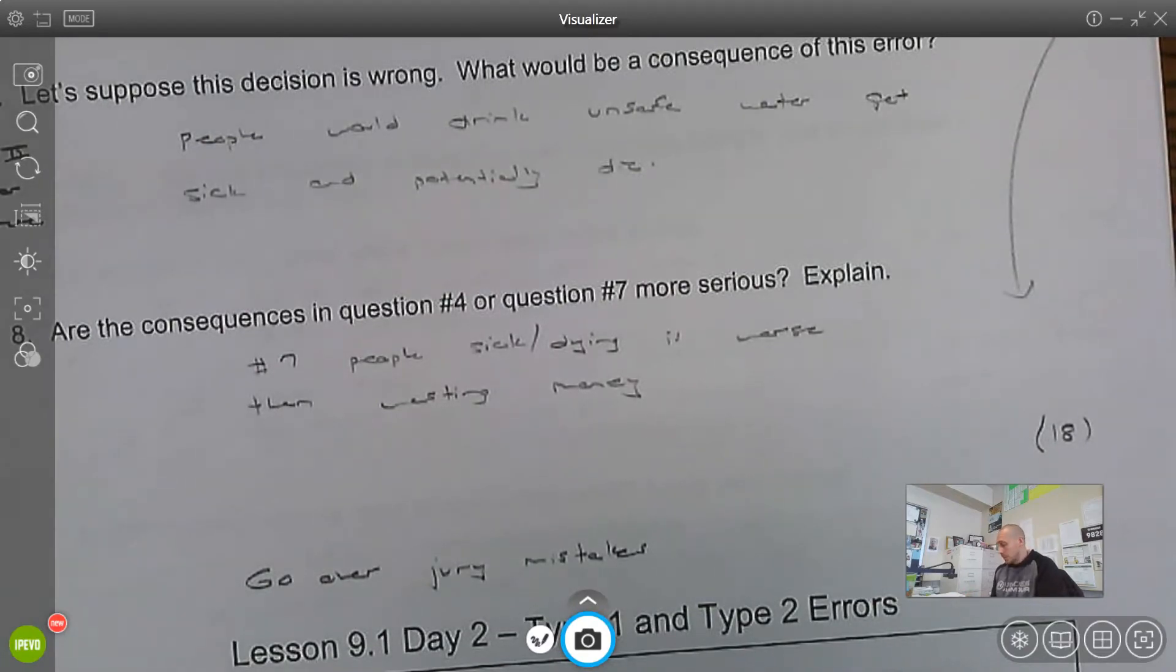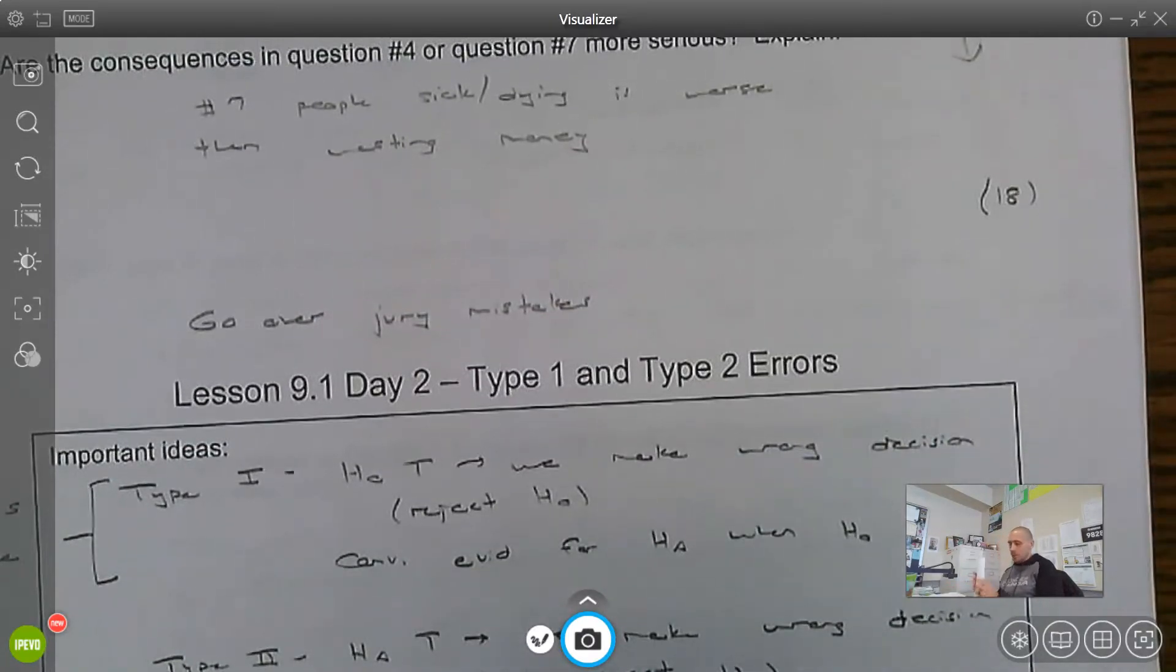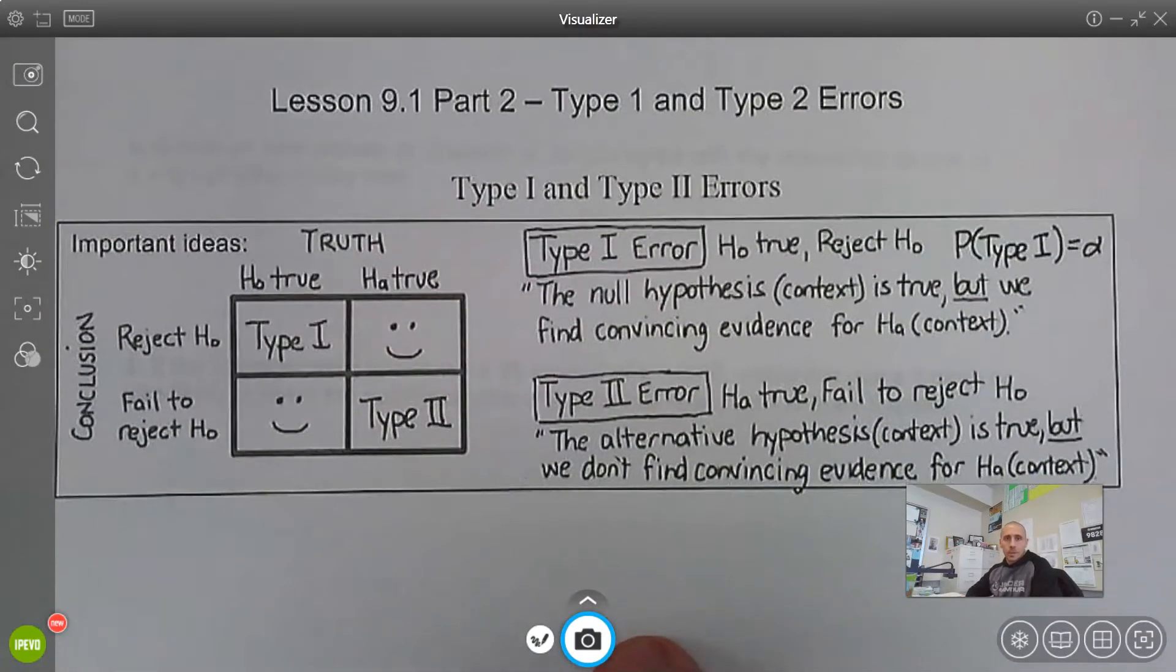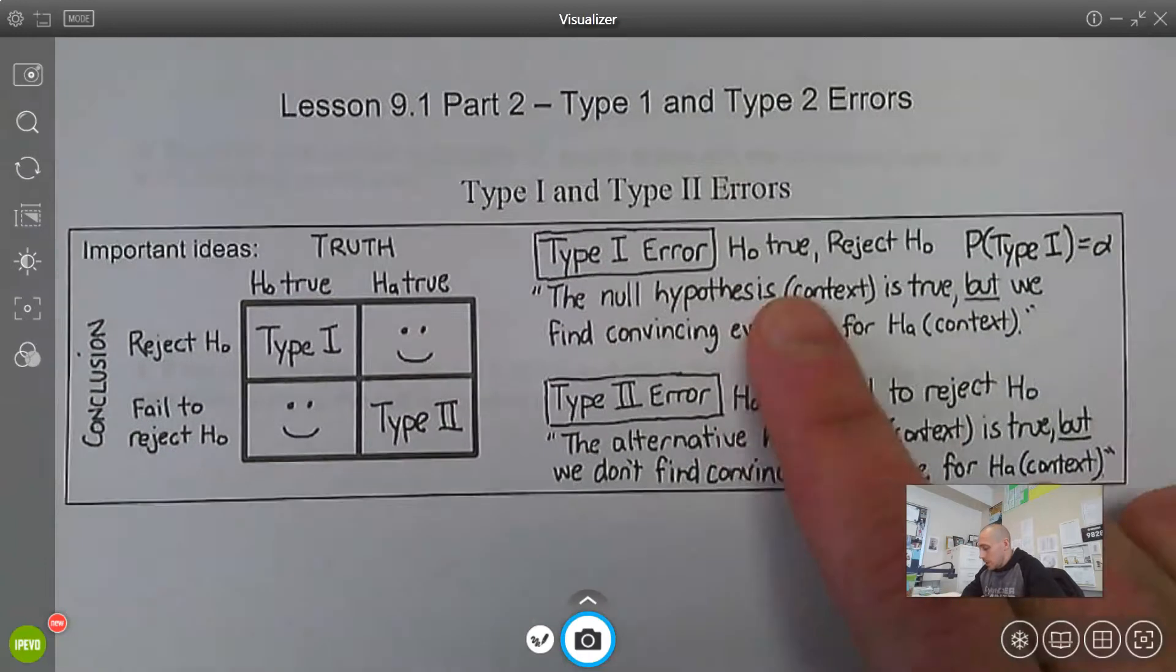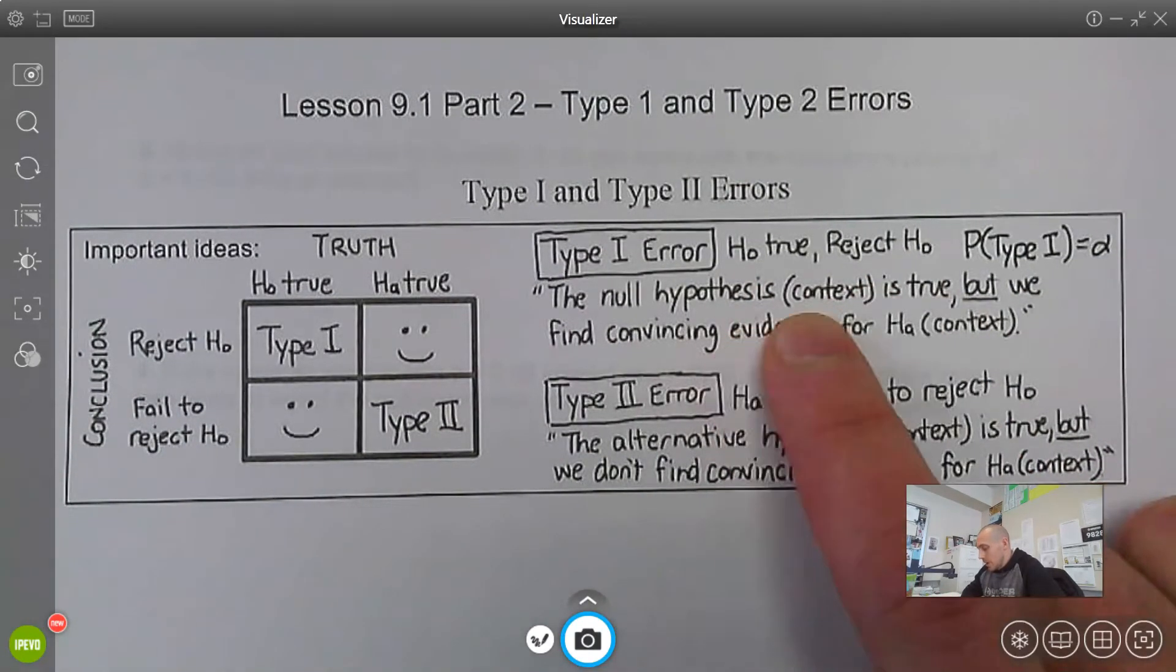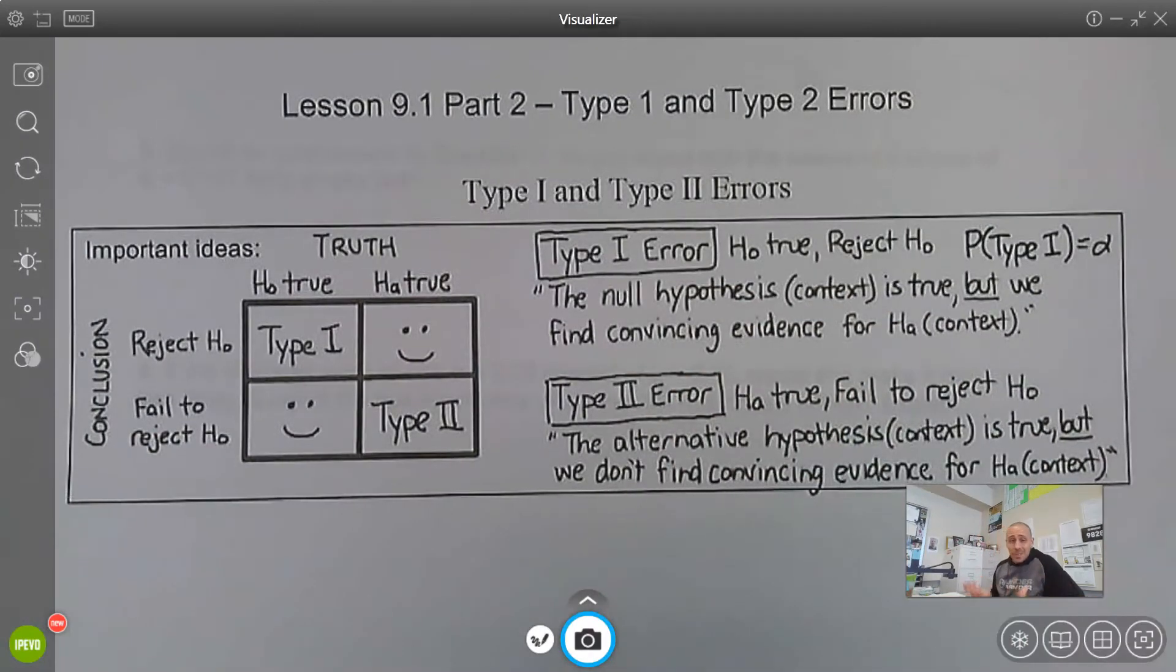So, important ideas. A Type 1 error: if the null is true and we're making the wrong decision. Type 1 error, the null is true, but we reject the null. So the null hypothesis is true, but we find convincing evidence for the alternative. It has to be a mistake.